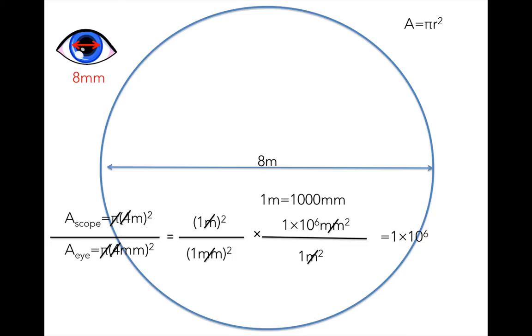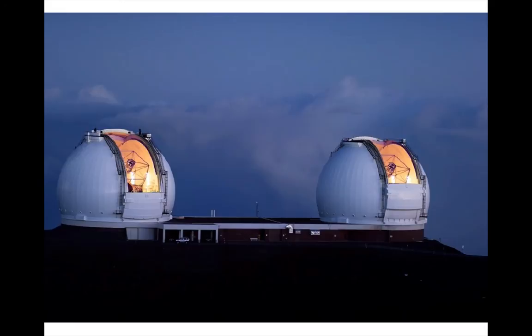It would take 1,000,000 human eyes to equal the light-gathering ability of today's largest telescopes, such as these, the twin 10-meter Keck telescopes on the summit of Mauna Kea in Hawaii.